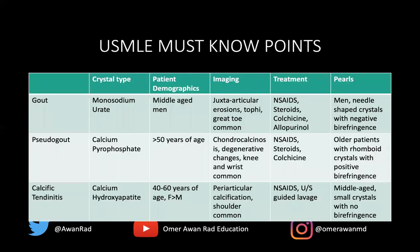So the USMLE must-know points: for gout, the type of crystal being deposited is monosodium urate. Typically happens in middle-aged men — they're not really going to show you a female on the USMLE presenting with gout. The imaging findings are juxta-articular erosions and soft tissue tophi. The great toe at the first MTP joint is the most common place to get gout.